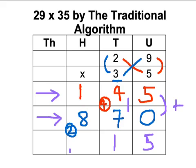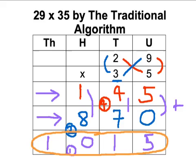Then I do 8 add 1, which is 9, add the 1 which I carry, which is 10. So I get a final answer of 1015. That's my final answer for the sum. 29 times 35 is 1015.